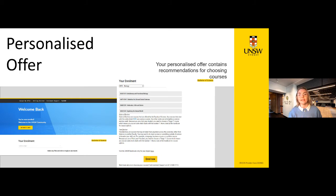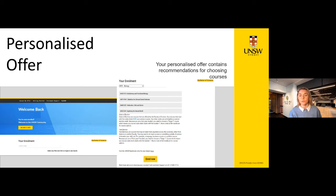Now is a good opportunity to step back and explain some fundamental terminology you'll get familiar with during your time at UNSW. Your programme is what you have been offered at UNSW and what you are commencing now — it refers to the set of requirements, courses or research which you are admitted to. A degree is what you are awarded upon completion of your programme. So during your time at UNSW, you will refer to your Bachelor of Arts or Bachelor of Commerce as your programme.